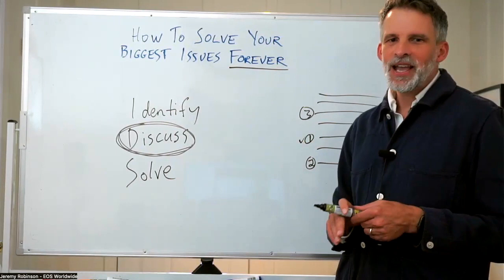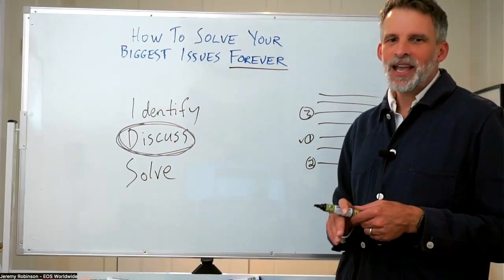So I hope that was helpful today, and it's called the Issues Solving Track. It's just one of the many tools we use in the entrepreneurial operating system to help business owners and leadership teams get more of what they want from their business.